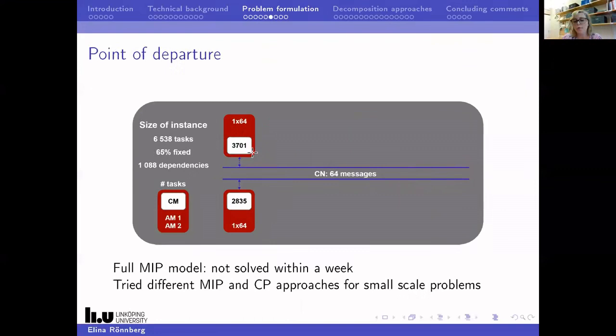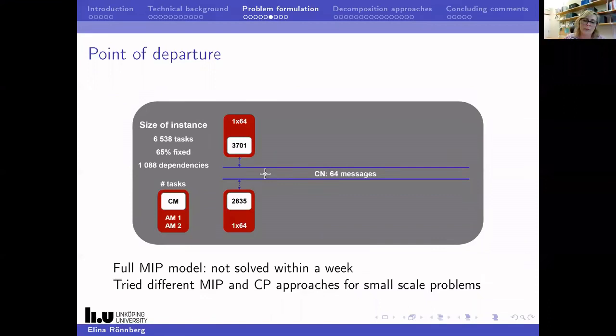We couldn't start with the largest instance. We also got some toy examples from the company where we first played around with a MIP model. We tried to solve it to find a feasible solution but weren't successful even after running it for a week. We tried to model it in different ways and also tried some constraint programming approaches for small-scale problems, but had no success. This is where we started the project.